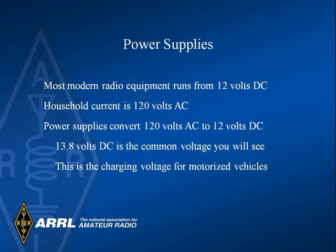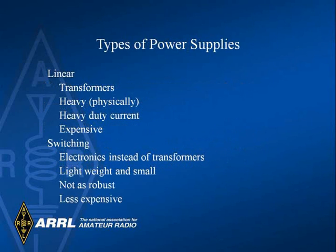Most modern radio equipment runs on 12 volts DC, but household current is 120 volts AC. Power supplies convert 120 volts AC to 12 volts DC. 13.8 volts DC is the common voltage, which is the charging voltage for motorized vehicles. There are two types of power supplies: linear and switching. Linear power supplies contain transformers and are heavy. Switching power supplies use electronics instead of transformers and are lighter weight and smaller, but some switching power supplies generate RF noise.